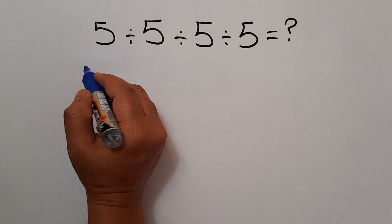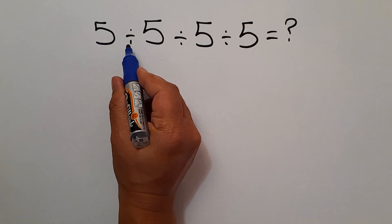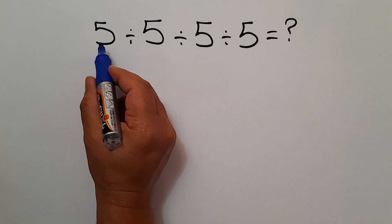When we have more than one operation in one expression, we have to work from left to right.